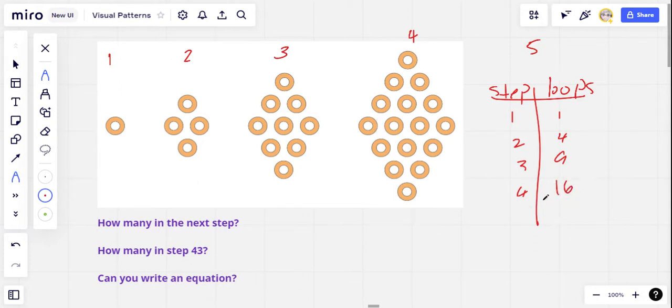16, if I counted that right. And actually now that I've written down the numbers, something jumps out at me very clearly. All of these numbers are perfect squares and they match the step number, right? One squared is one, two squared is four, three squared is nine, four squared is 16.